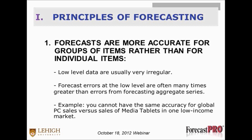Let's start with the first principle — forecasts are more accurate for groups of items rather than for individual items. Forecast accuracy is much better at the aggregate than at the lower level. At the low level, data is usually very irregular, and forecast errors at the low level are often many times greater than errors from forecasting aggregated series.